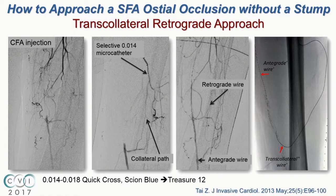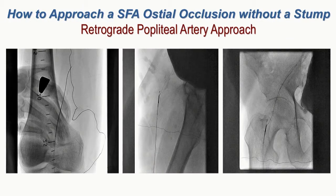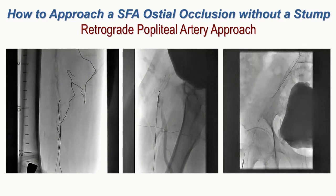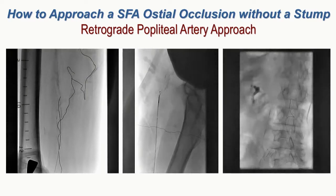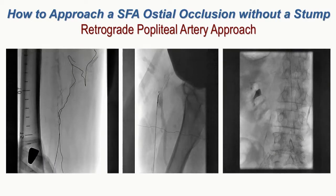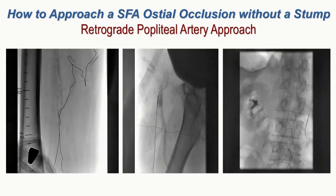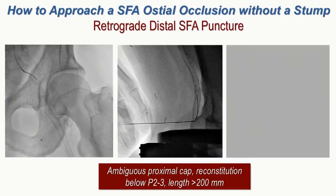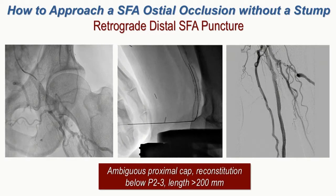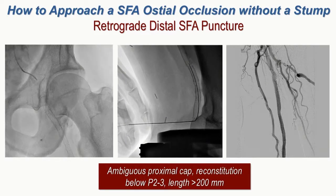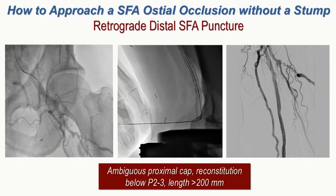In one case, an O14 quick cross catheter, Shion blue, and then a Treasurer 12 wire was used. Initially I thought this was a no-stump SFA ostium, but during re-entry going the other direction I actually saw the nub — reiterating that extreme angulations can often define a nub that seems absent at first. In a true no-nub case with extreme confusion at the ostium, a previously placed stent was partially occluding the profunda, and was fractured at multiple points. We punctured through the stent, providing an easier target, then went retrograde to complete the case.